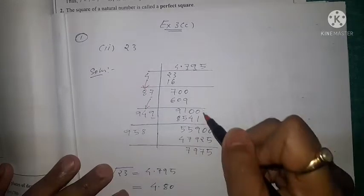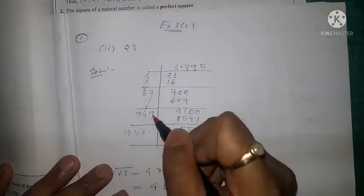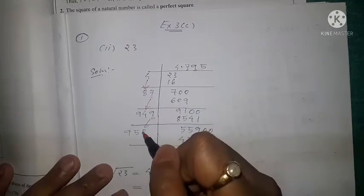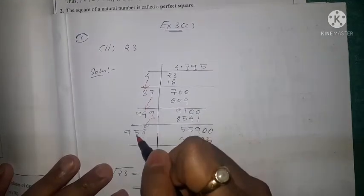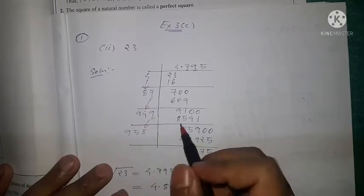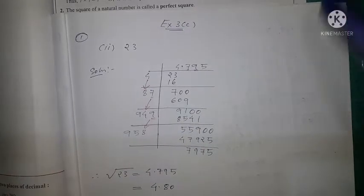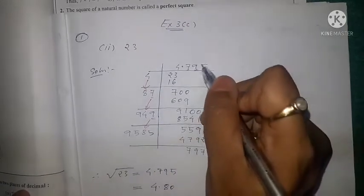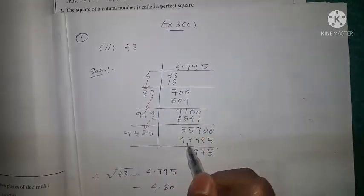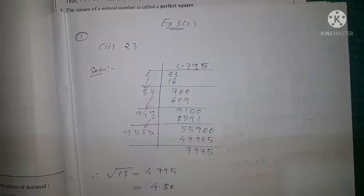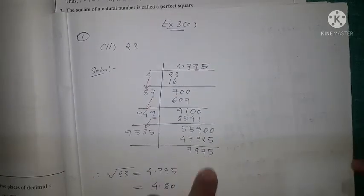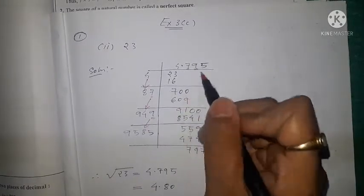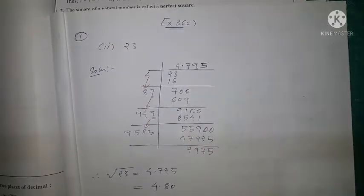Again we take two zeros. This 9 is doubled to 18; the 1 is carried, so 4 + 1 = 5, and the 9 comes as it is, giving 9585. So 9585 × 5 = 47925, and the remainder is 7975. We stop after three decimal places.